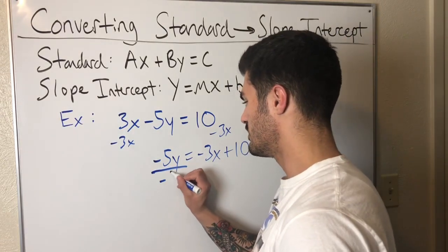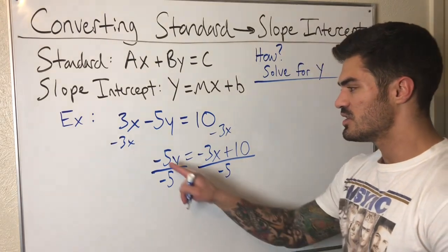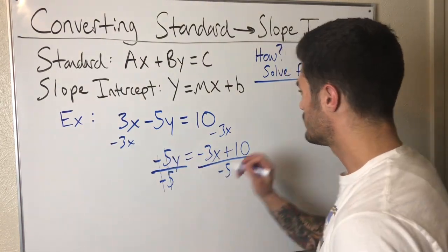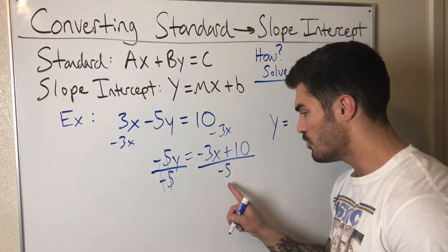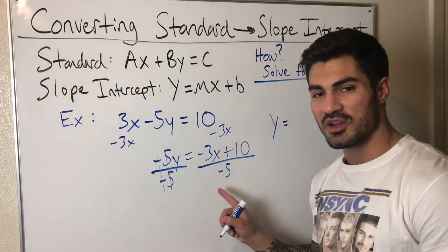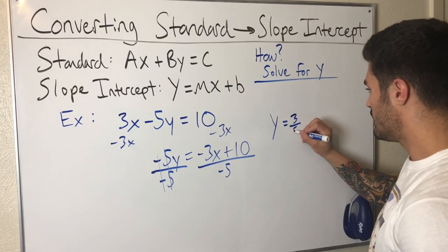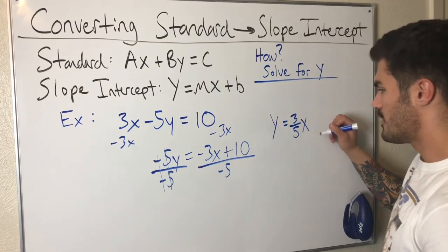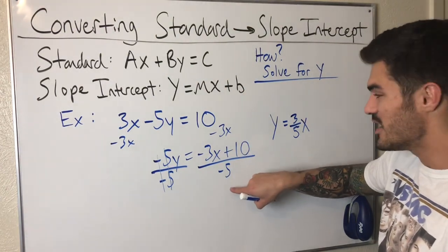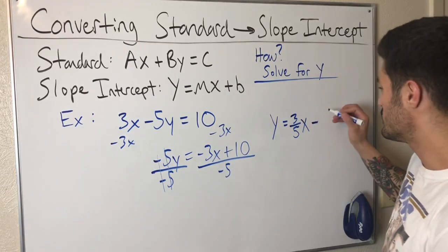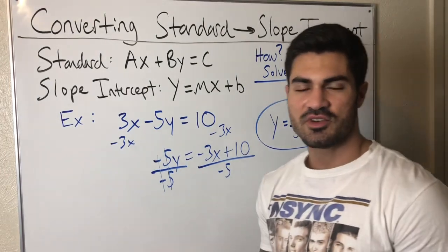And now look, how can I get Y by itself? I can divide by -5, so I just have to be careful with my signs. That's all I have to do is be careful with my signs. So -5 divided by -5, that gives me 1, so I'm left with Y. What am I left with here? -3x over -5. Remember both of these get divided by -5. -3x over -5, that's positive 3/5, right? Negative divided by a negative is plus. 10 over -5—now it's a positive divided by a negative, that's a negative—so minus, and 10 over 5 is 2. Bam!